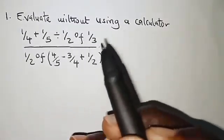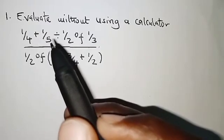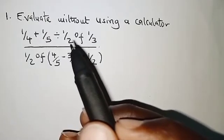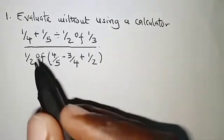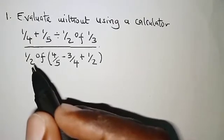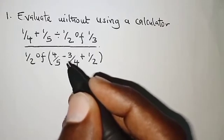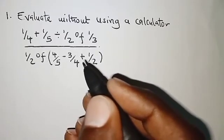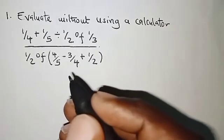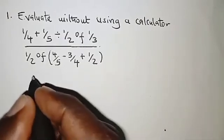Evaluate without using a calculator: one quarter plus one fifth divided by one half of one third, all over one half of, in brackets, four fifths minus three quarters plus one half. In this question we are going to use BODMAS.